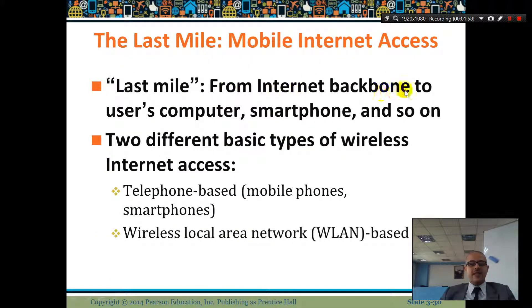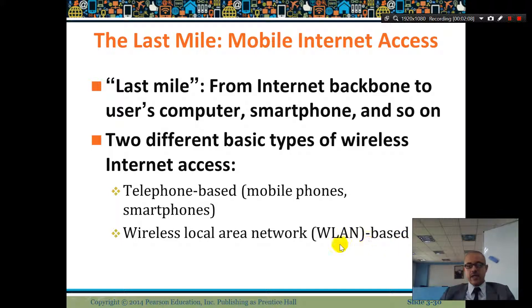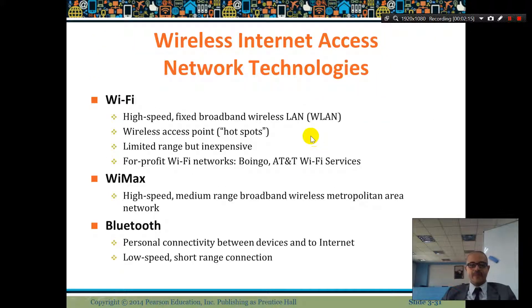The last mile connects the internet backbone to users — computers, smartphones, and so on. There are two different basic types of wireless: telephone-based mobile phones and wireless local area network (WLAN) based. Once you have mobile internet, everyone will have wireless internet access and network technologies.